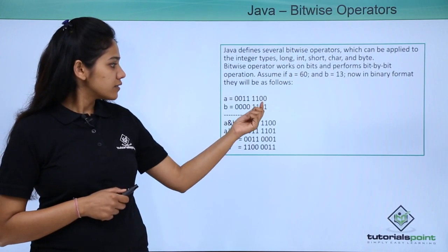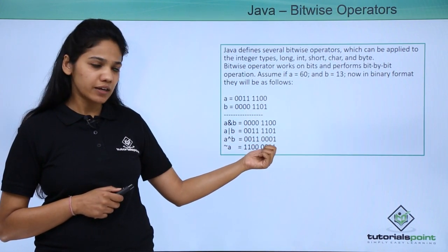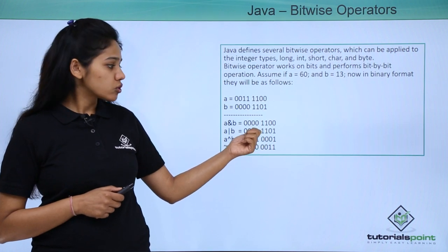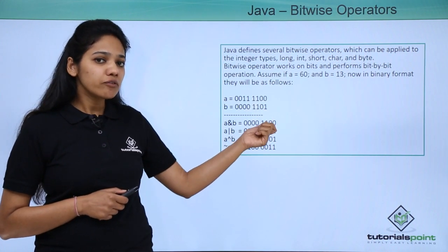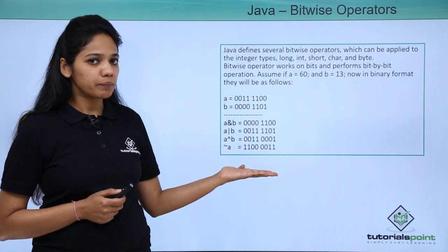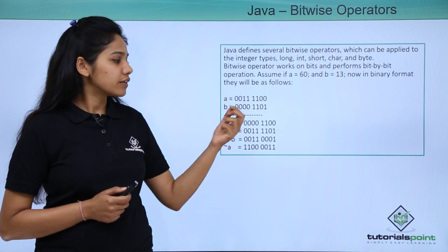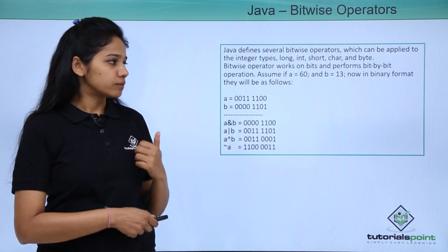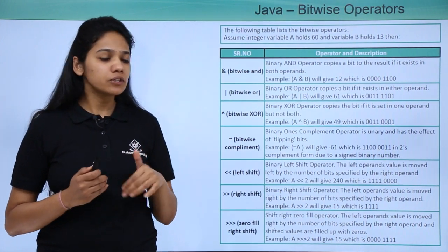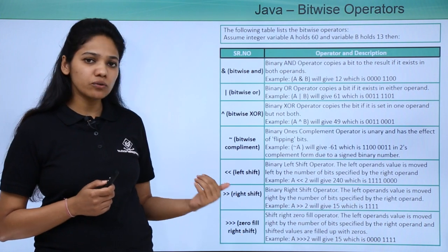Going back to the previous slide: 0 and 1 gives result 1; 0 and 0 gives result 0; 1 and 1 gives result 0. So for XOR, if either operand has a bit value of 1 (but not both), the result is 1; if both are 0 or both are 1, the result is 0. The next operation is bitwise complement, which is exactly opposite to the value provided.